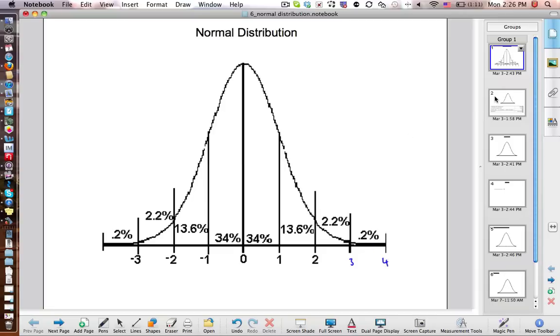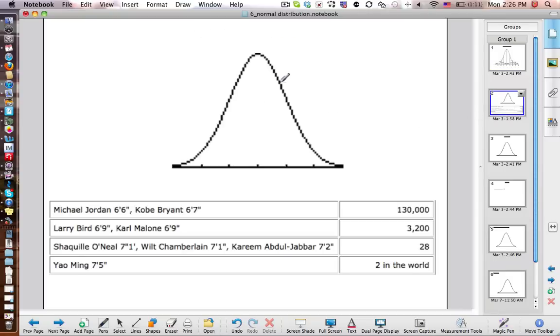One cool application of normal distribution or where we find the normal distribution is heights, or weight or anything like that. But in particular, heights in the United States has the average male height of 5 foot 10 inches, which would be 70 inches, and the standard deviation is 3 inches.